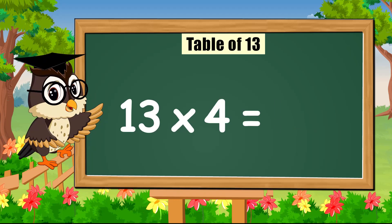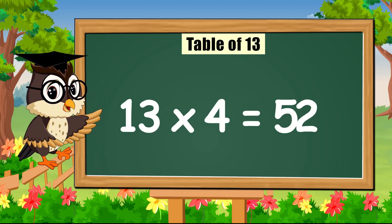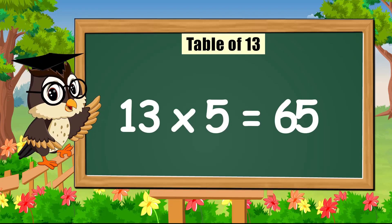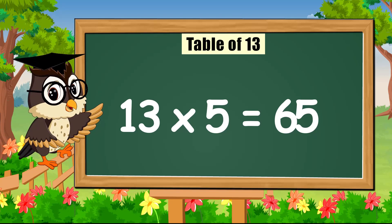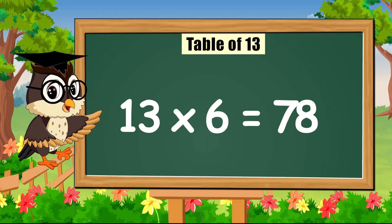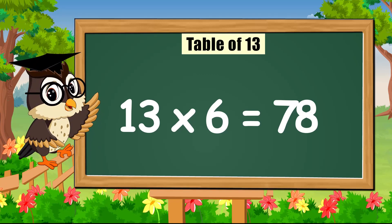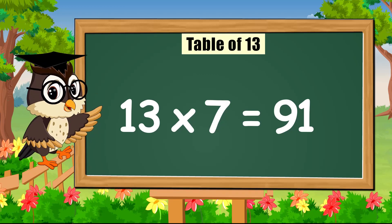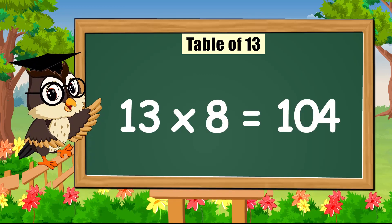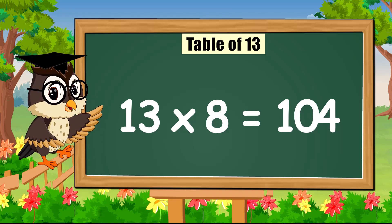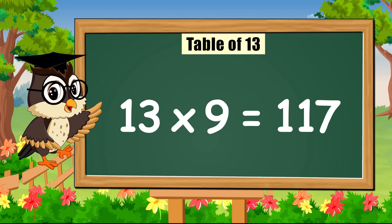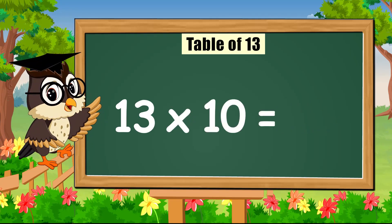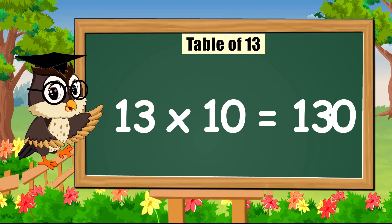Thirteen times four is fifty-two. Thirteen times five is sixty-five. Thirteen times six is seventy-eight. Thirteen times seven is ninety-one. Thirteen times eight is a hundred and four. Thirteen times nine is a hundred and seventeen. Thirteen times ten is a hundred and thirty.